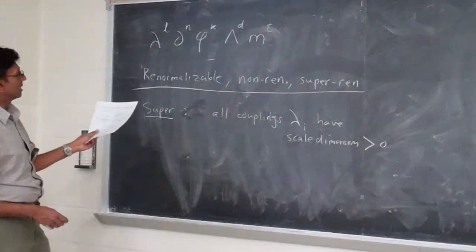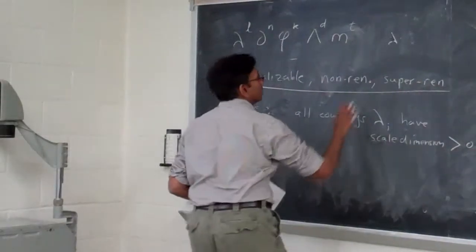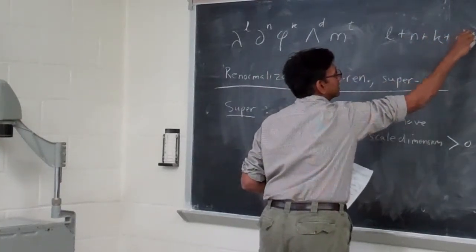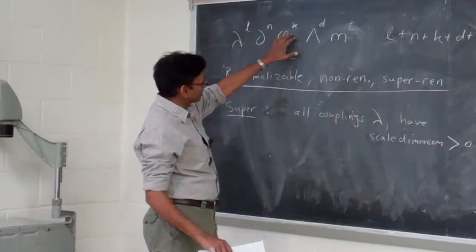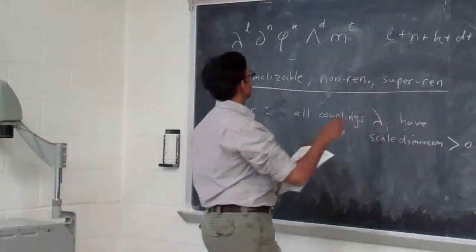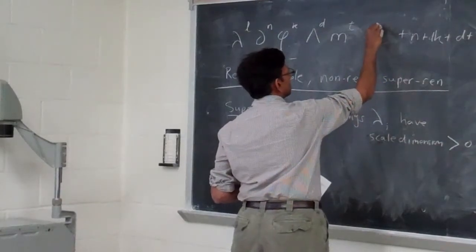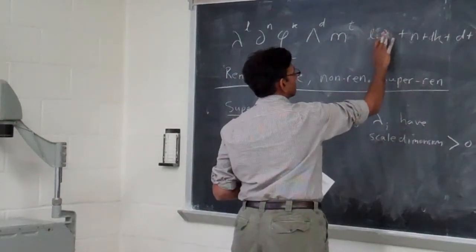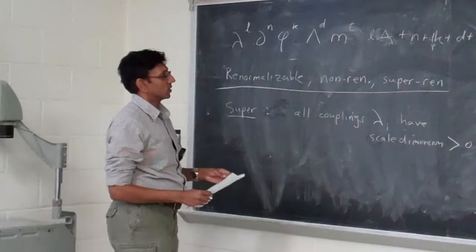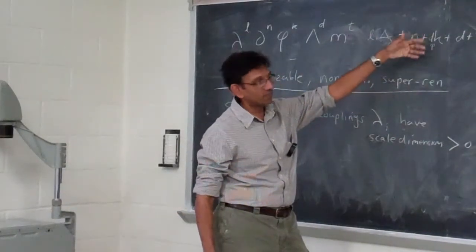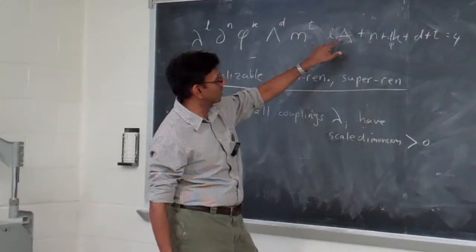Why is it worthy of note? Because we know that l + n + k + d + t has to be equal to 4, and we know each of these contributions has to be greater than or equal to zero. This is the scale dimension of whichever type of field you have; if you have several types of fields you have to sum over the different terms. These are the different types of couplings with their scale dimensions, and so on.